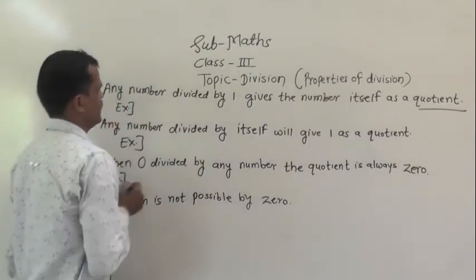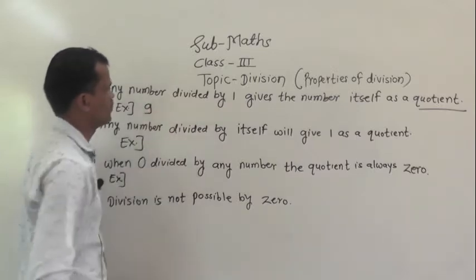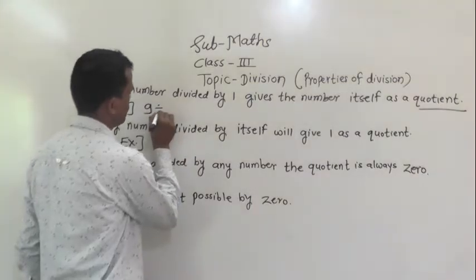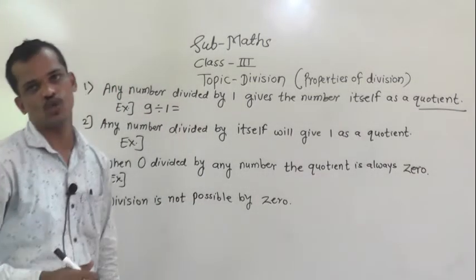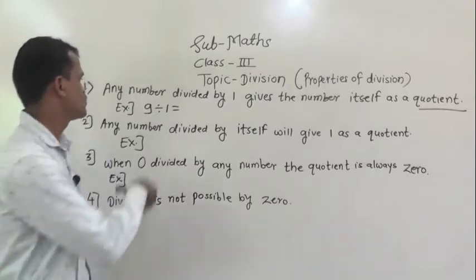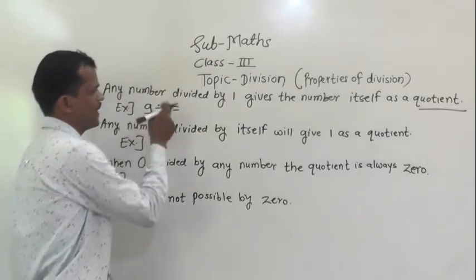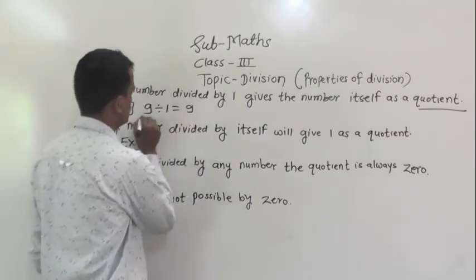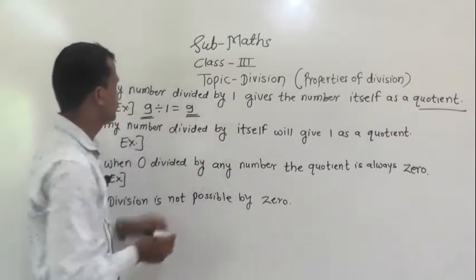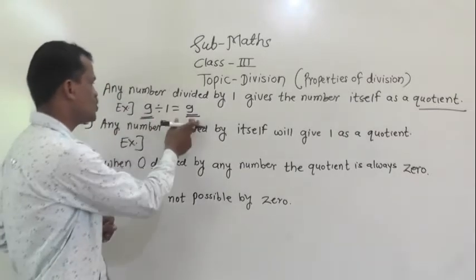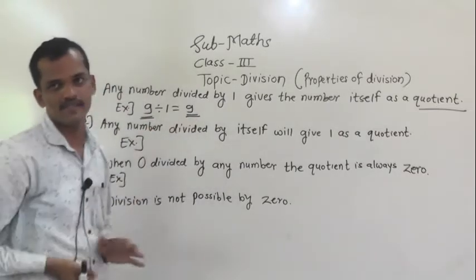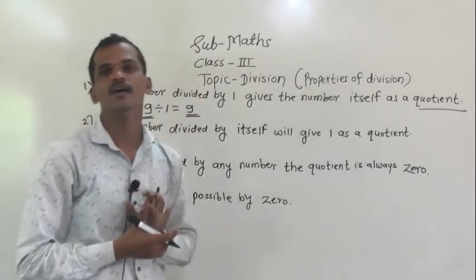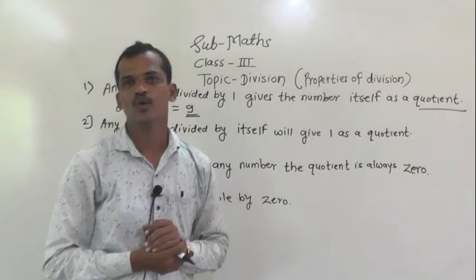Take any number — I am taking here 9. We will divide 9 by 1 and then we will see which quotient will come. So, dividing 9 by 1, here 9 comes as the quotient. Just observe here: the quotient and that number are the same, meaning any number divided by 1 gives that same number as the quotient.